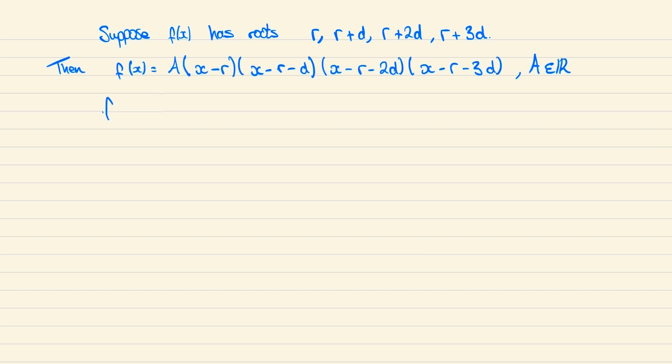If we next consider the transformation f of x plus r which will just shift the function left or right by r, then we can write this as A times x times x minus d times x minus 2d and finally x minus 3d.